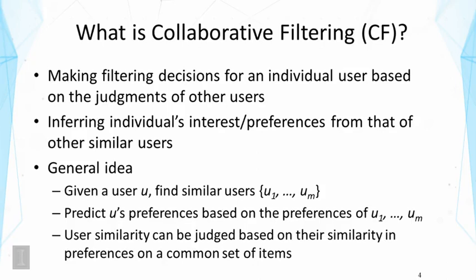User similarity here is judged based on their similarity in preferences on a common set of items. The exact content of the items doesn't really matter — we only look at the relation between users and items. This means the approach is very general and can be applied to any items, not just text documents.